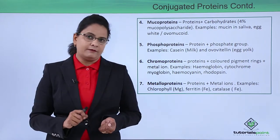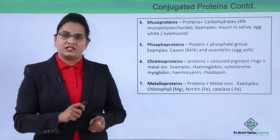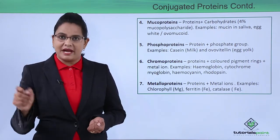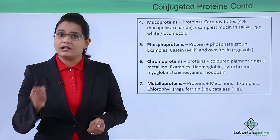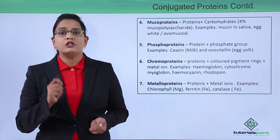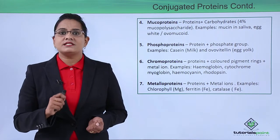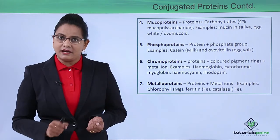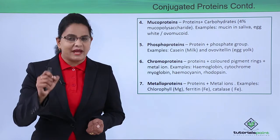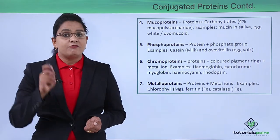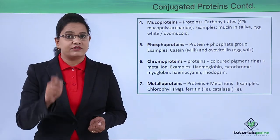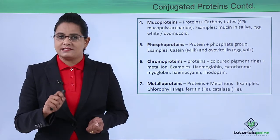The next category is metalloproteins — proteins associated with a metal. A very common example is chlorophyll. Chlorophyll is also a chromoprotein because it gives green color to the leaf, but it is associated with the metal magnesium. Ferritin, present in blood, is associated with iron, and catalase enzyme is also associated with iron, so it is a metalloprotein.